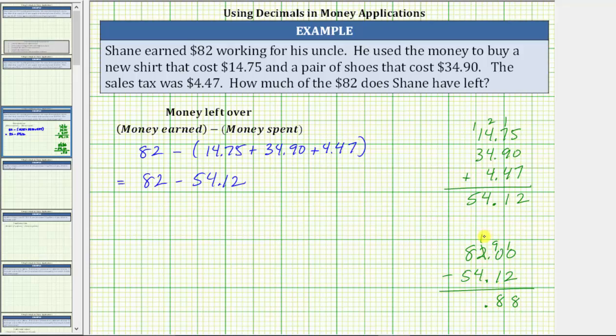Here we cannot subtract four from one. We perform another exchange. The eight changes to a seven, and now we have 11 in the ones place value. 11 minus four is seven. In the tens, seven minus five is two, giving us a difference of 27.88, which means Shane has $27.88 left.